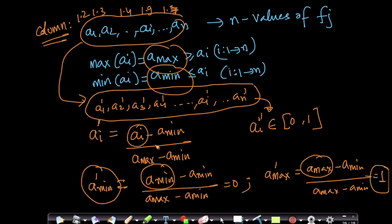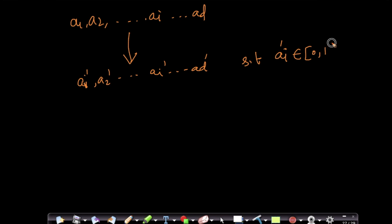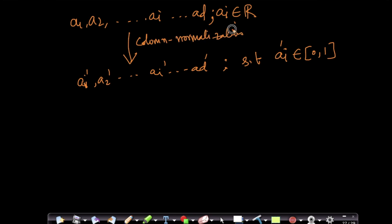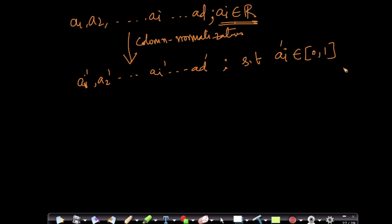So given any feature vector containing values a1, a2, ai, ad, you're transforming it into a1_dash, a2_dash, ai_dash, ad_dash, such that each ai_dash belongs to [0, 1]. The original ai's could belong to any real value — it doesn't matter. Through column normalization, you're transforming them into this range. You're squishing all the values — they could be any real value — and compressing them into [0, 1]. The 'what' part is clear.